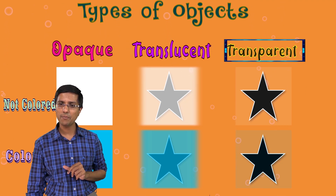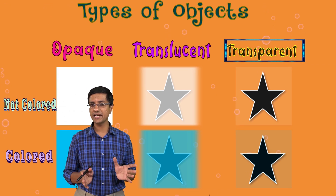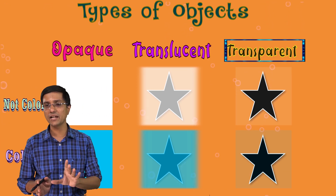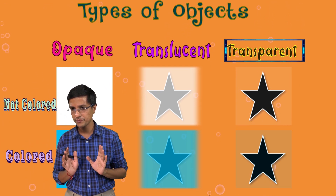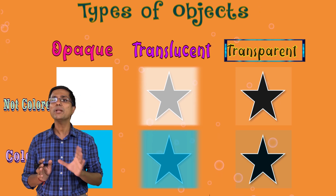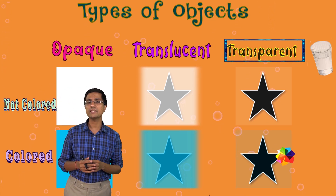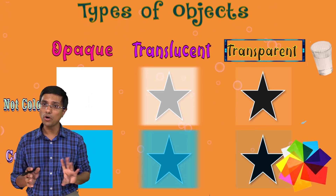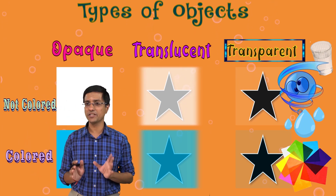Whereas in the case of transparent, I am able to clearly make out what's on the other side. It is not fuzzy — it is really very clear. Maybe colored, maybe not. Examples of transparent materials are glass, cellophane, even colored cellophane, water, air — all of them are transparent.